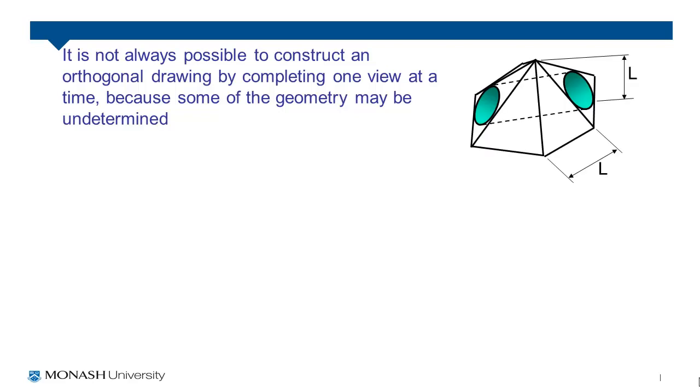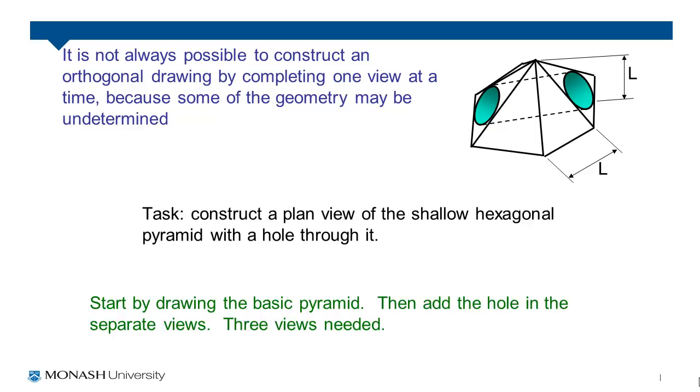The object we are going to be taking a look at is this pyramid, a six-sided pyramid with a hole going through the middle. Our game plan here will be to start by drawing a basic pyramid and then add the hole in the separate views as needed. We will need a total of three different views to fully complete and represent this pyramid.